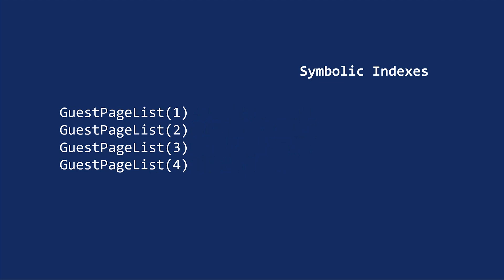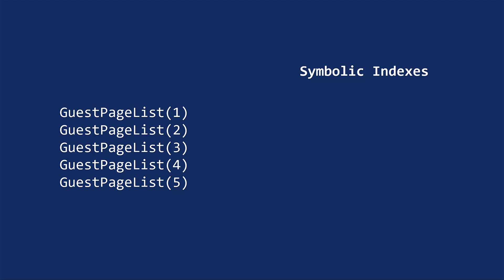For example, append adds a new item at the end of the page list. On the other hand, if you want to add an item at the start of the page list, sliding all the existing items one spot over, you can use prepend.